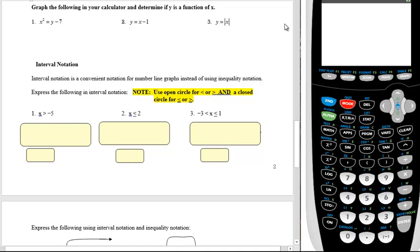Now when you graph, you use an open circle for less than or greater than, and a closed circle for less than or equal to or greater than or equal to. So the first thing we've got to do is graph these.